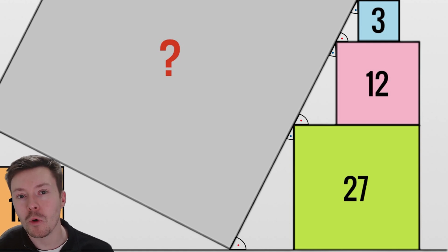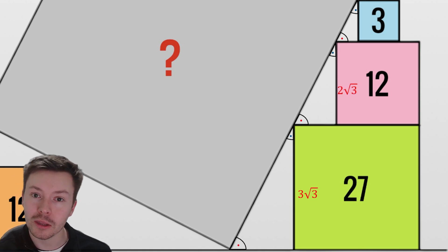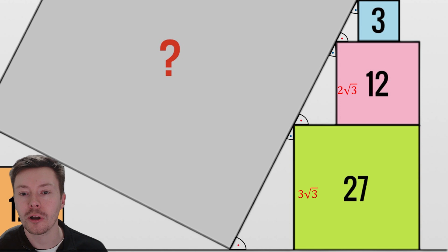From there, we can work out some lengths by square rooting our areas. This length is 3√3 by square rooting 27, this length is 2√3 by square rooting 12, and this length is √3 by square rooting 3.